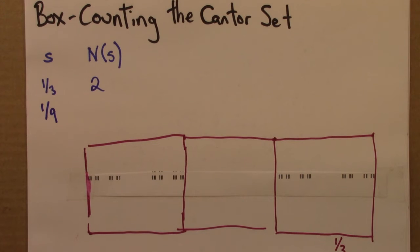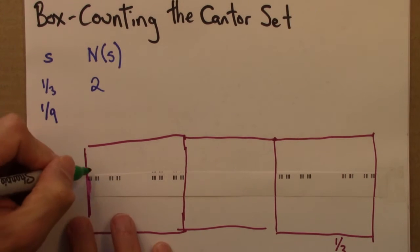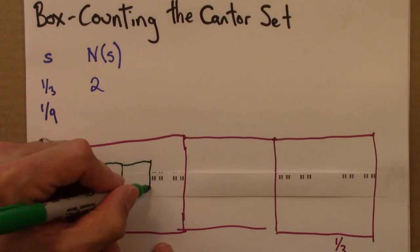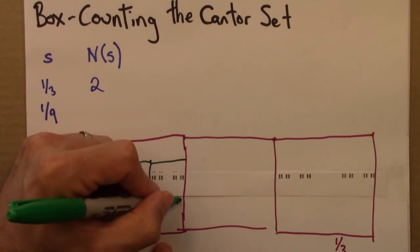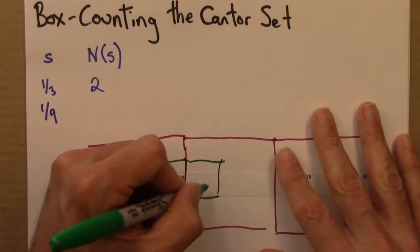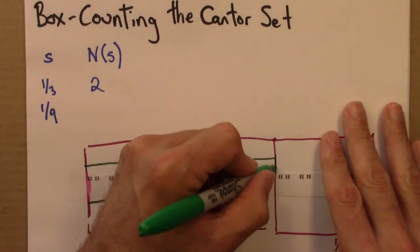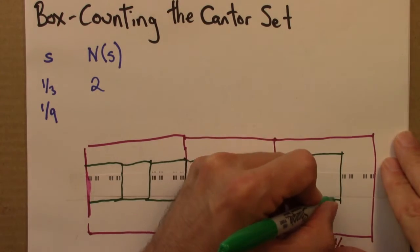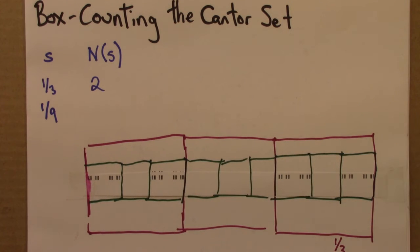Let's now do a ninth. Get a different color. So now if I do squares of side a ninth, that's a third of a third. So how many of those do I need?